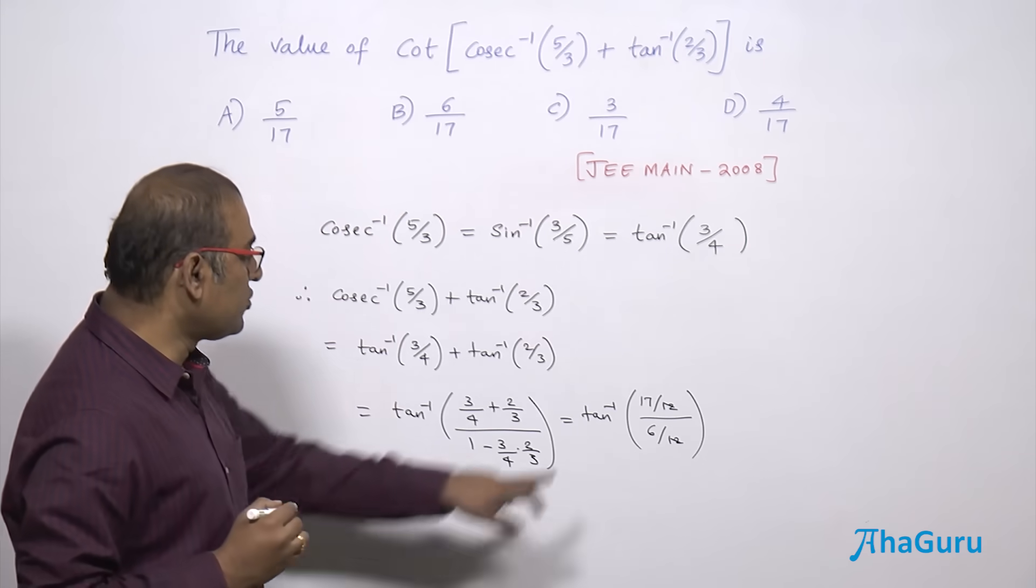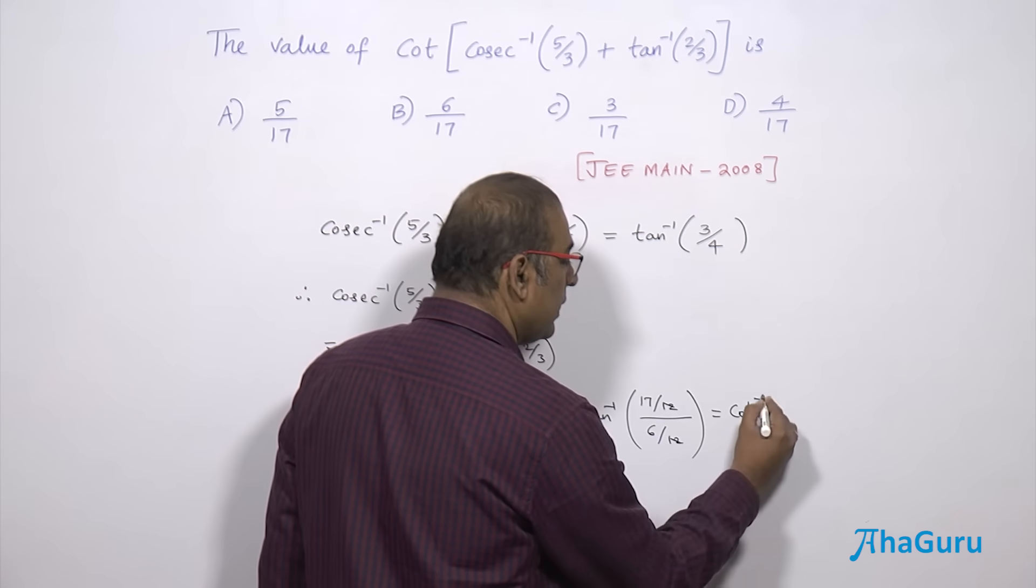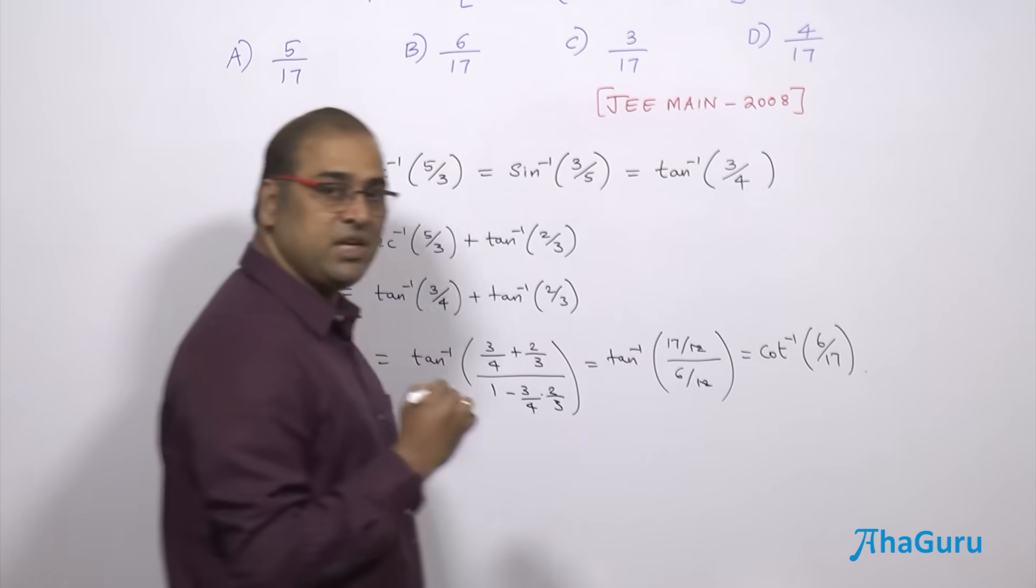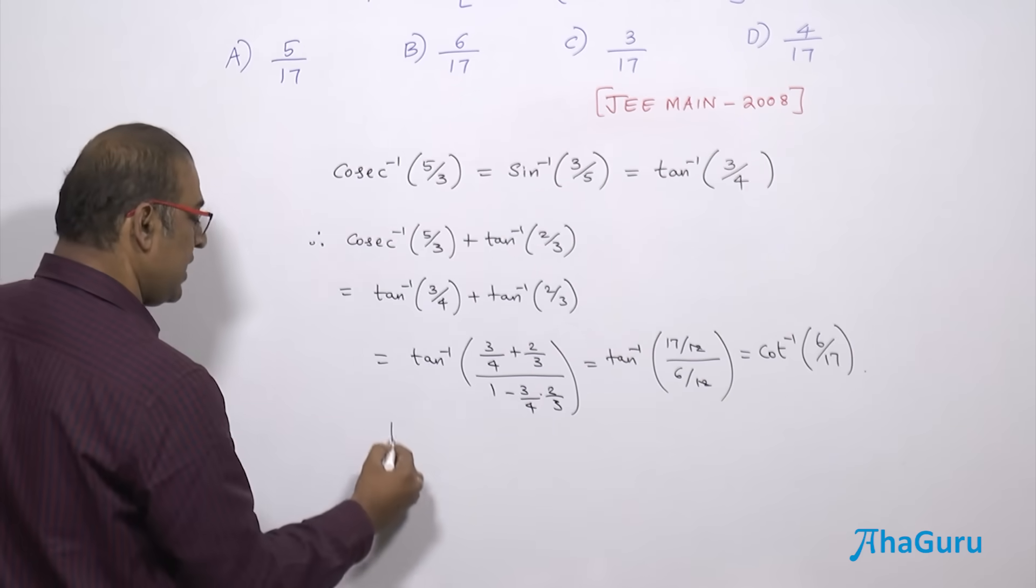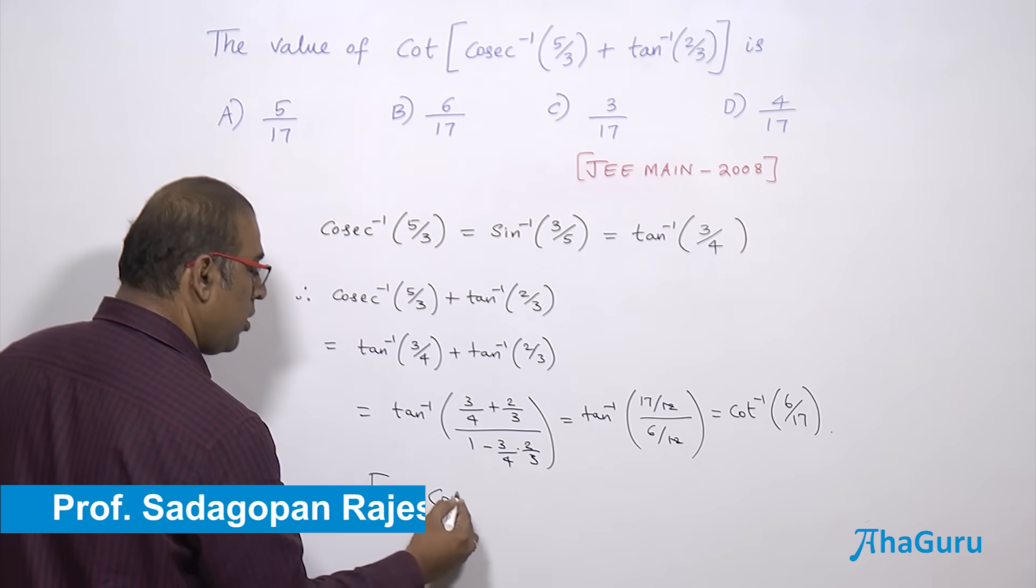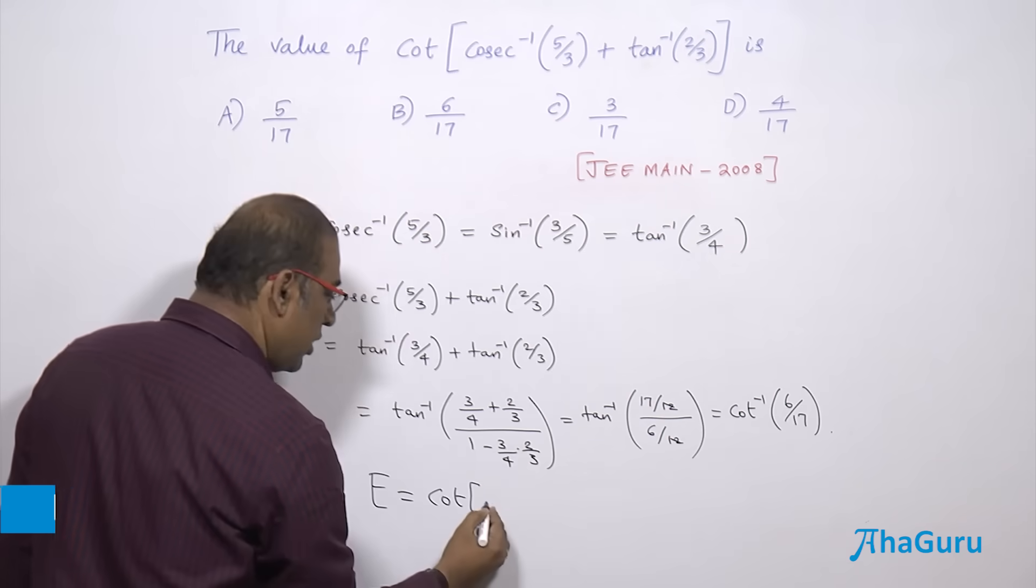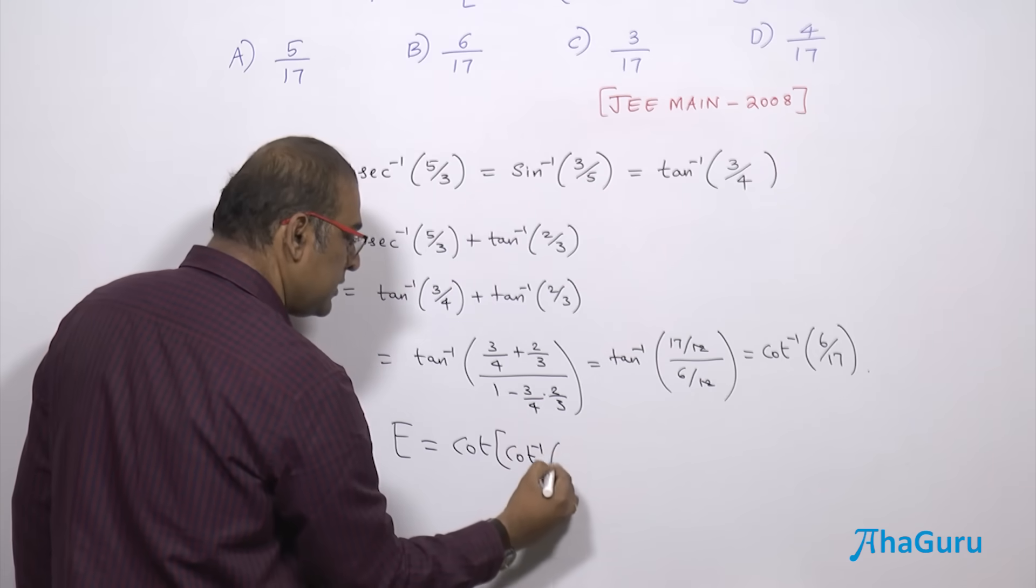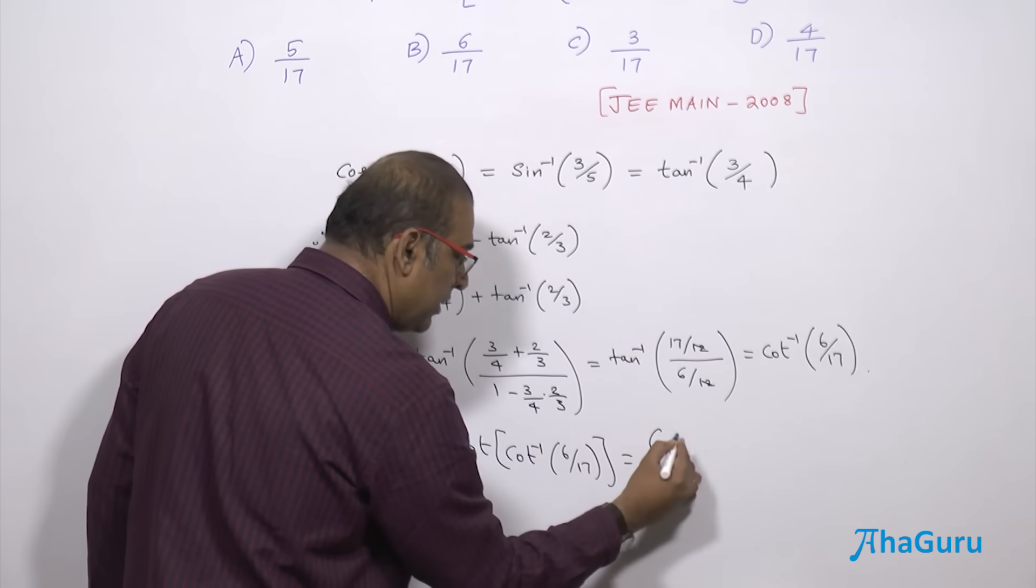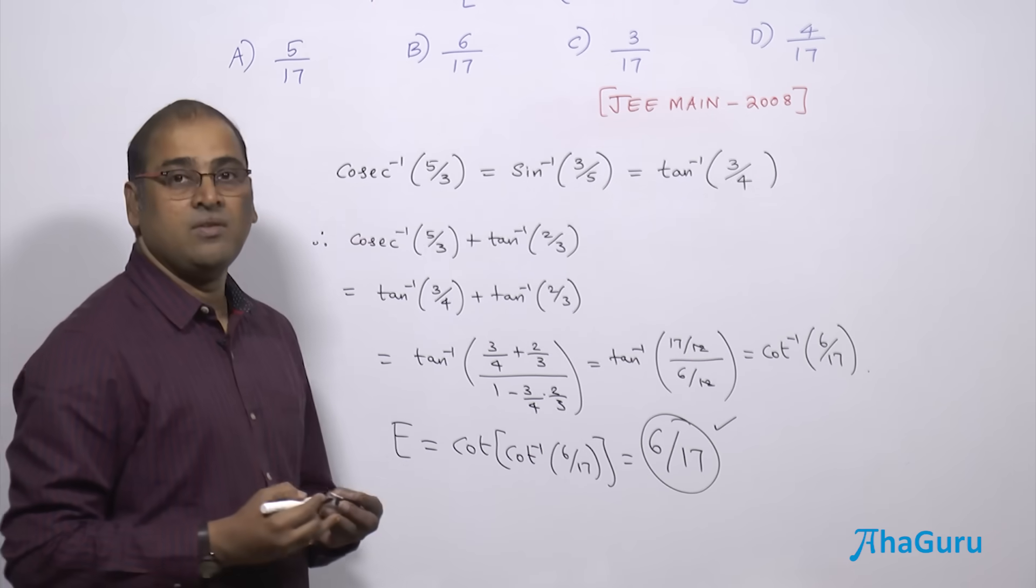But we have a cot. So let us try to convert this to cot inverse. Tan inverse of 17 by 6 is nothing but cot inverse of 6 by 17. Therefore, our expression E is going to be cot of cot inverse of 6 by 17. So the cot of cot inverse will cancel and we will be getting 6 by 17.